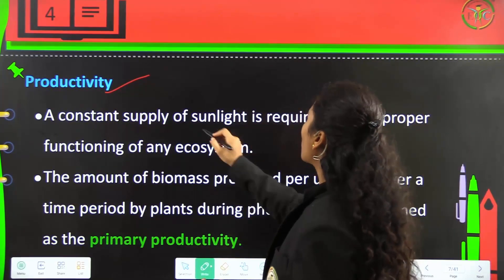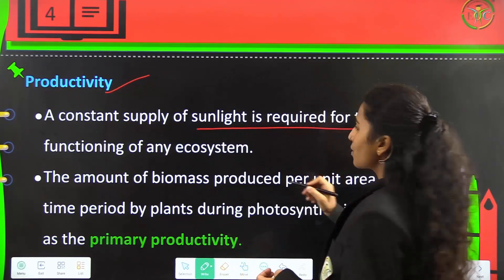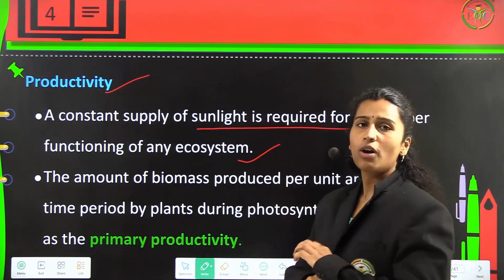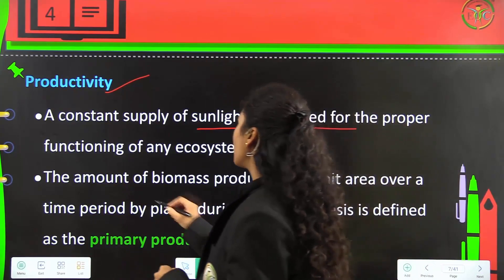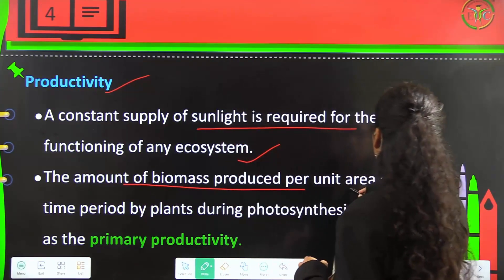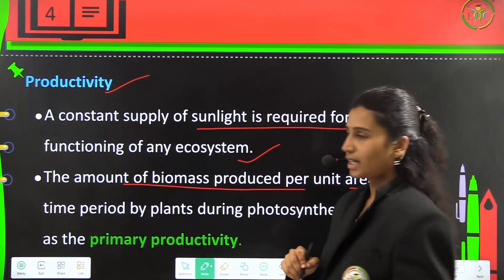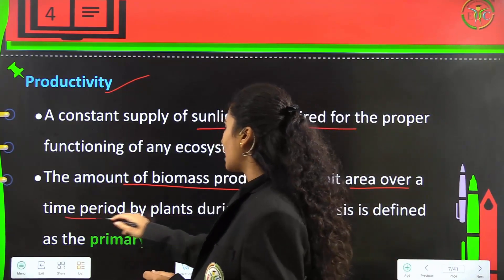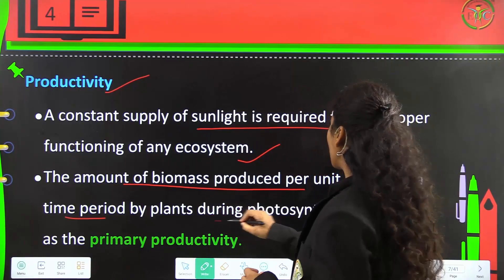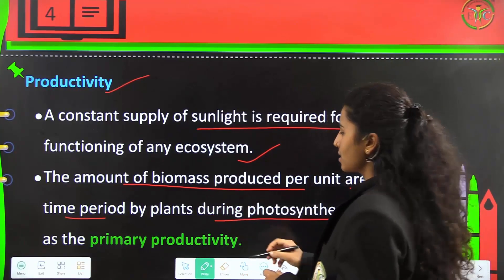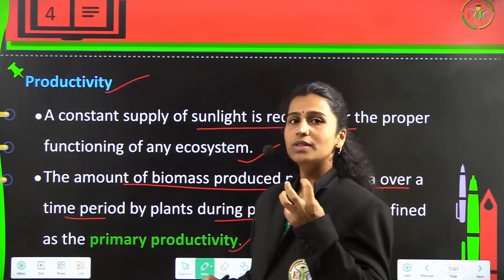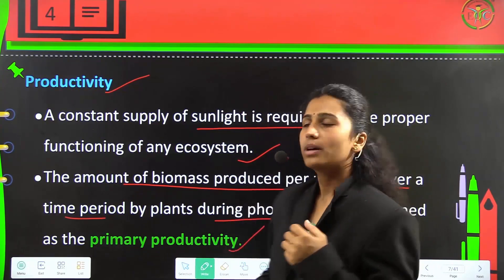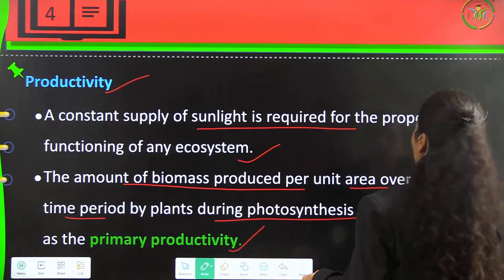A constant supply of sunlight is required for the proper functioning of any ecosystem, either biotic or abiotic. The amount of biomass produced per unit and the amount of sunlight trapped during photosynthesis by plants.